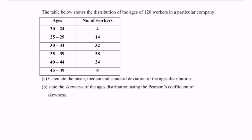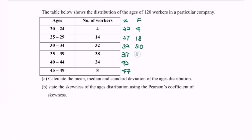My suggestion is to build up the table with columns: H (class interval), F (number of workers), midpoint, and cumulative frequency. The midpoint is found as (upper boundary + lower boundary) / 2: so (24.5 + 19.5) / 2 = 22 for the first class, then 27, 32, 37, 42, and 47. The cumulative frequencies are: 4, 18, 50, 88, 112, and finally 120.